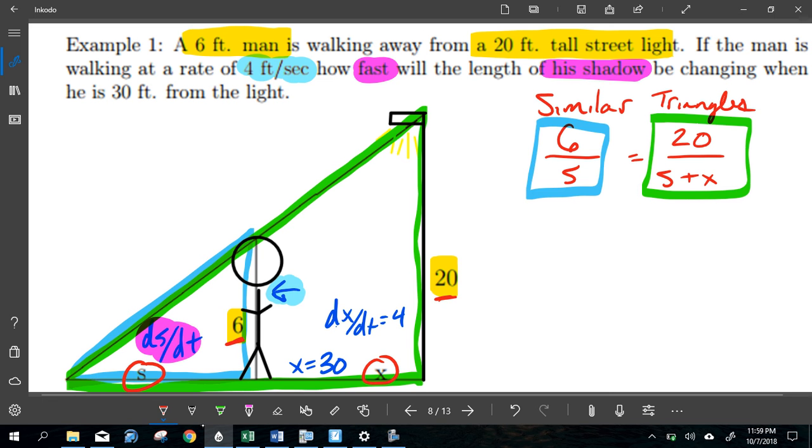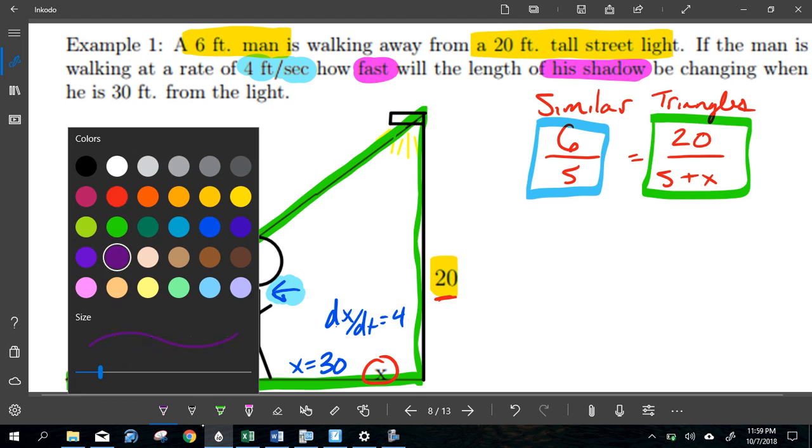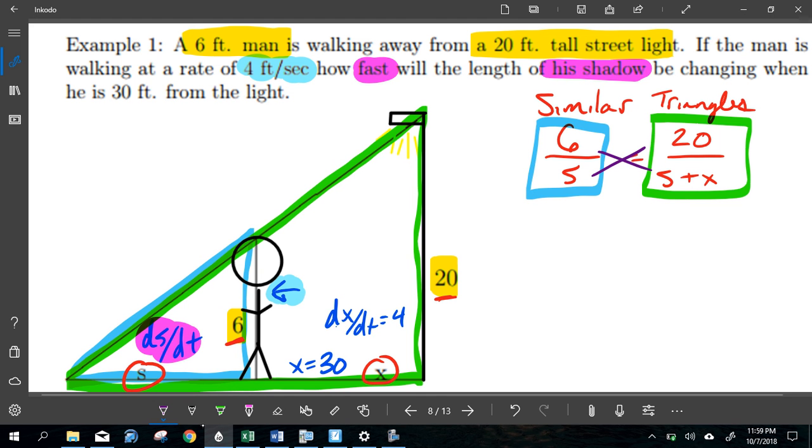So that's my formula. And before I take a derivative, I'm going to simplify. And so to simplify that, we are going to cross multiply. So 20S equals 6S plus 6X. Just distributed that. Combine like terms, so I'm going to move that over. 14S is equal to 6X. Now that I've got to that point, I'm going to take a derivative. The derivative of 14S is 14 dS dt. And the derivative of 6X is 6 dx dt.